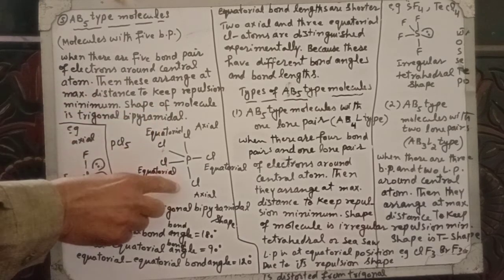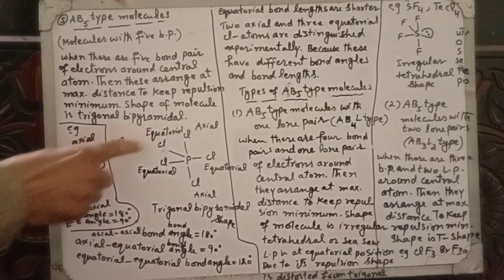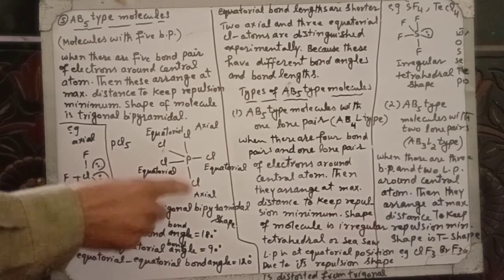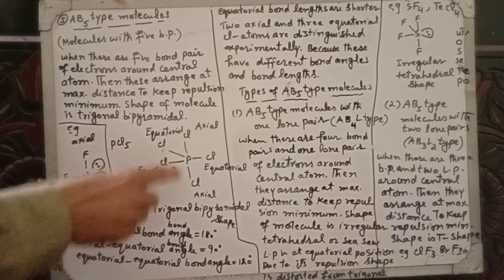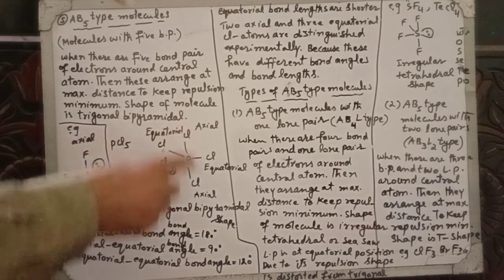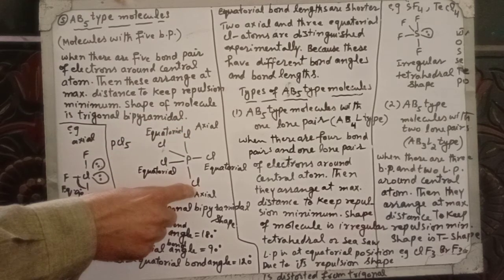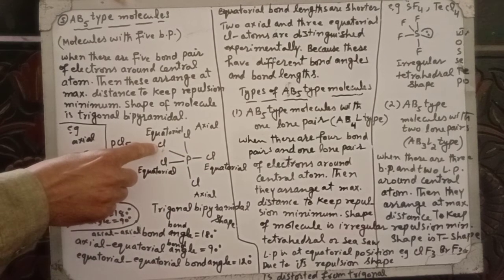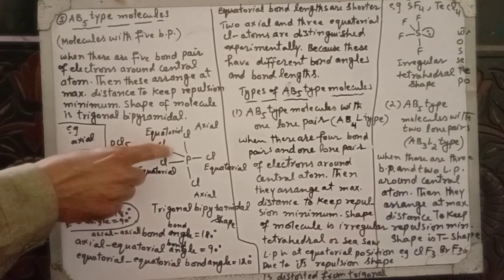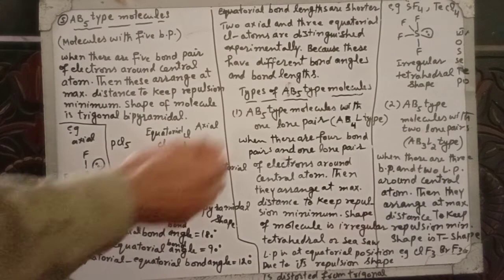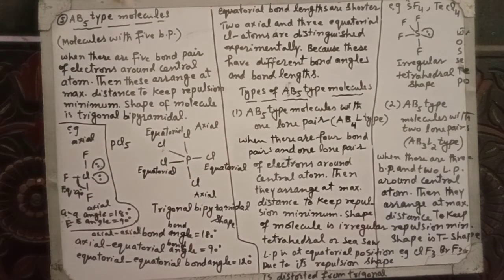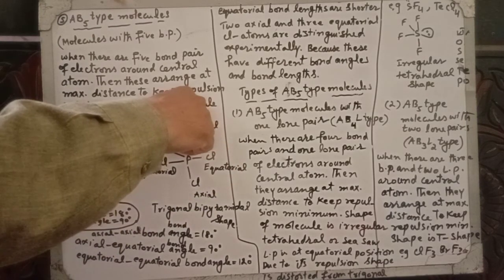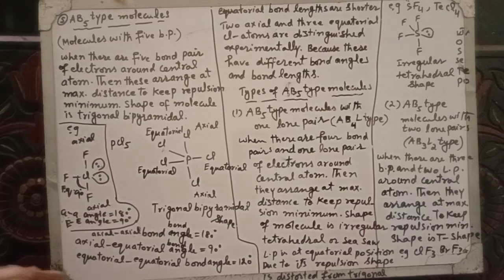PCl5 is a trigonal bipyramidal molecule. Phosphorus has five bond pairs. There is an axial Cl, an equatorial Cl, and other equatorial Cl atoms. The equatorial positions form a triangular shape and the overall structure is called trigonal bipyramidal.